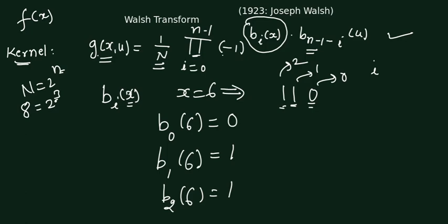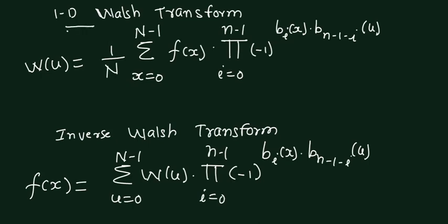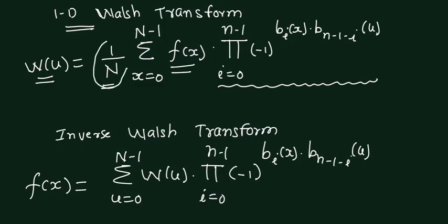Using this kernel our next task is to write the one-dimensional Walsh transform equation for f(x). The forward Walsh transform is written as W(u) equals 1/N times the sum of f(x) multiplied by the kernel we just discussed. For the inverse Walsh transform, the major change is that the 1/N multiplication term is not present. In the inverse Walsh transform, the goal is to recover the signal f(x) from W(u), with the kernel remaining the same.